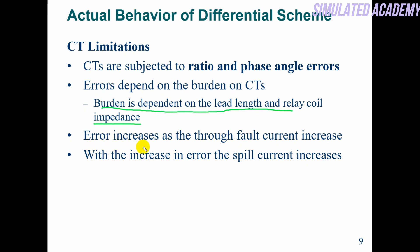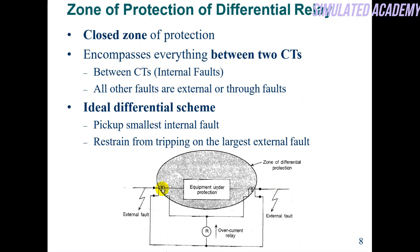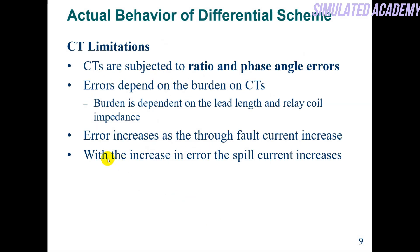Error increases as the through fault increases. When the through fault current value increases, and because of differing turns ratios, as the current value keeps increasing, the mismatch increases. That mismatch current will pass through the relay, causing it to operate. So when the through current increases, the relay may operate incorrectly.